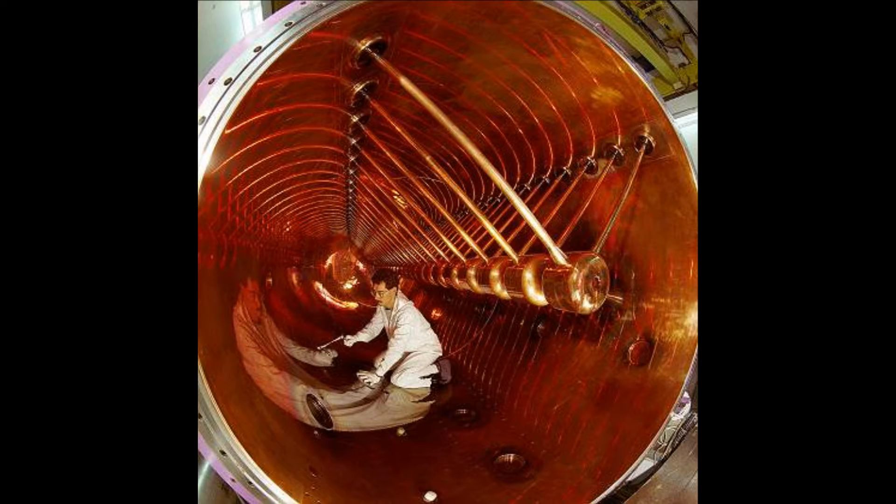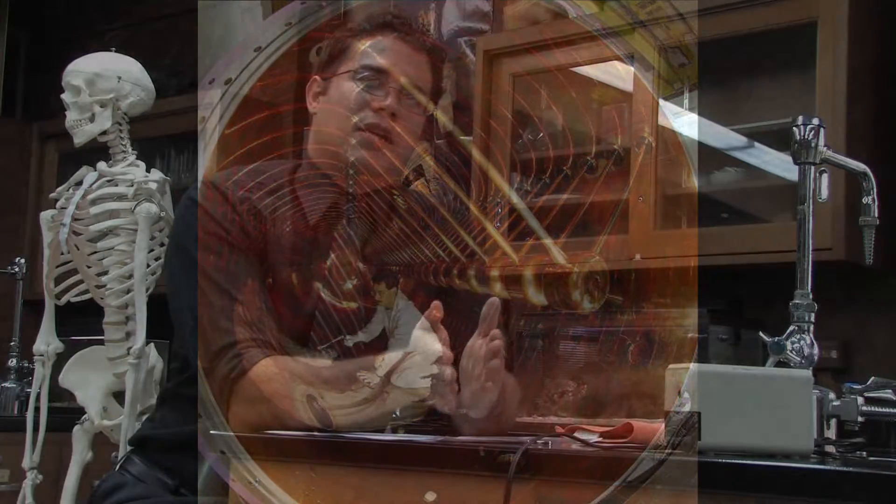Particle accelerators can be linear. That means that the proton, for example, will be traveling in a straight line, and then the target will be put at the end of the line. The proton will hit the target and collide, and the collision will split the proton into its parts. Scientists can then measure those parts.